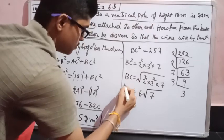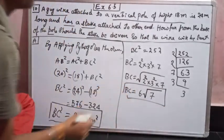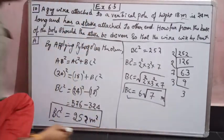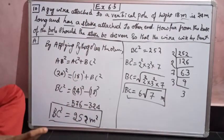Therefore, BC is equal to 6√7. And we have the units as meters, 6√7 meters. I think you have understood guys. Thank you.